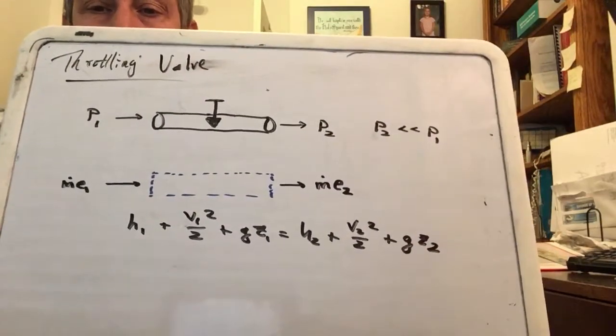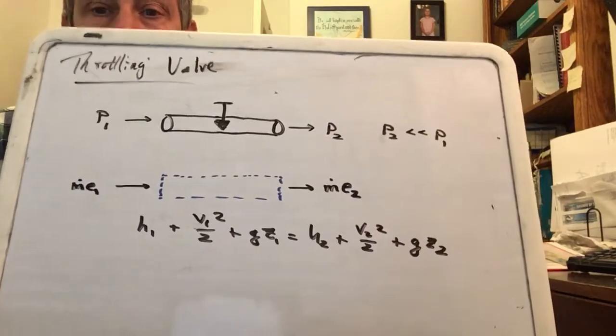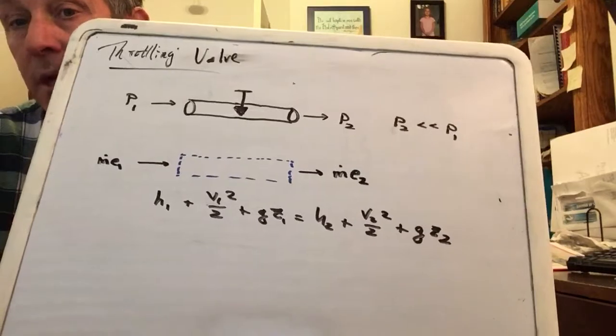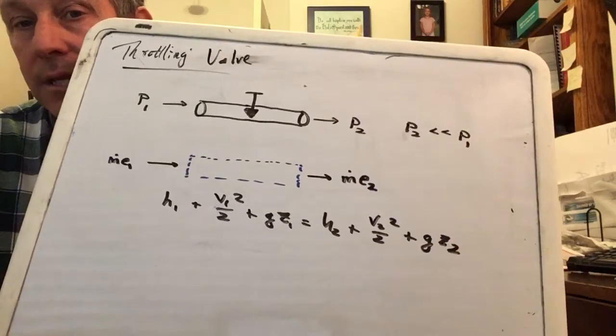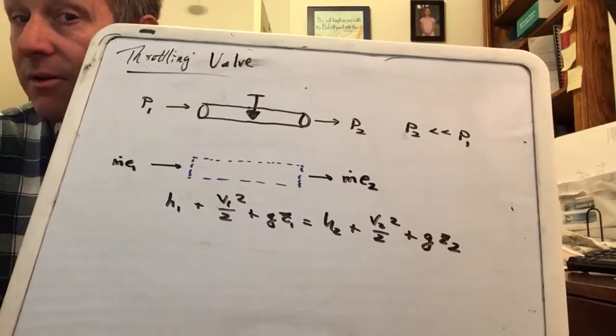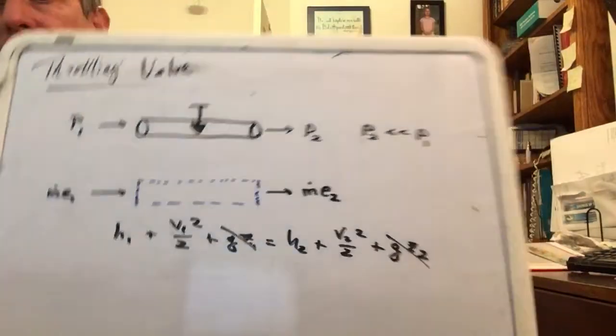Writing that out: enthalpy plus kinetic plus potential equals enthalpy plus kinetic plus potential. What we always try to do is say, are any of those changes insignificant? For sure we can eliminate the potential terms. Those throttling valves are either horizontal or very short, so there's very little difference in potential energy.